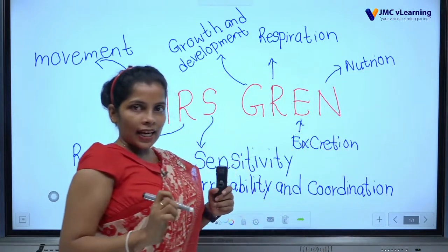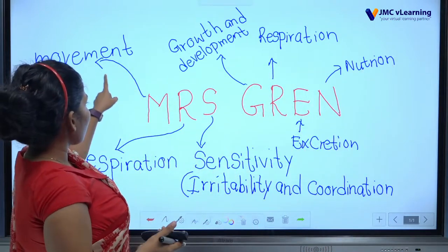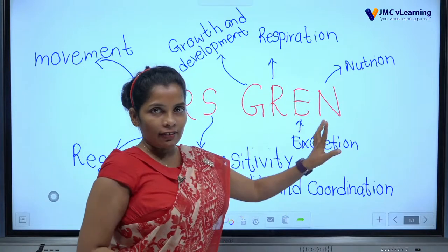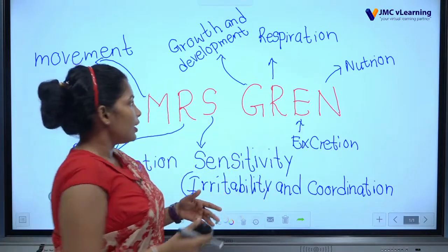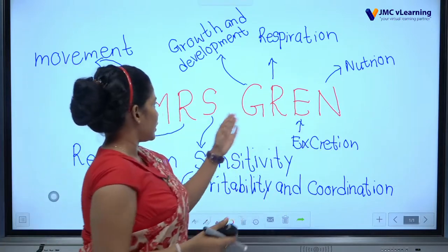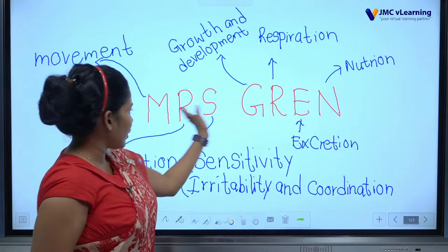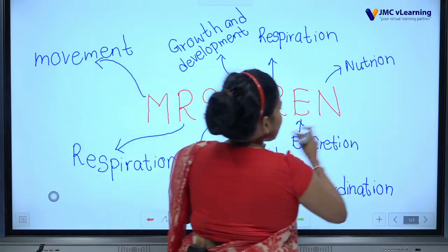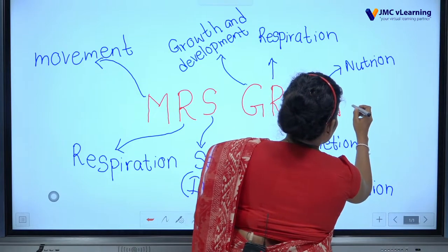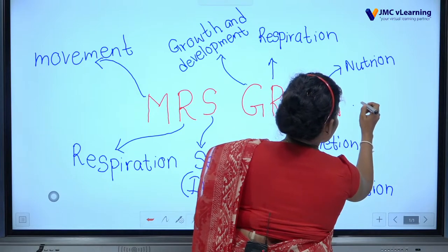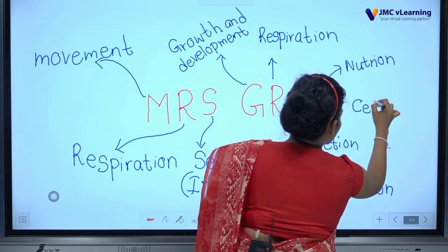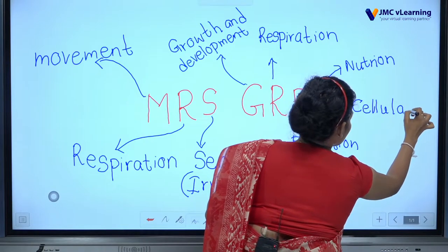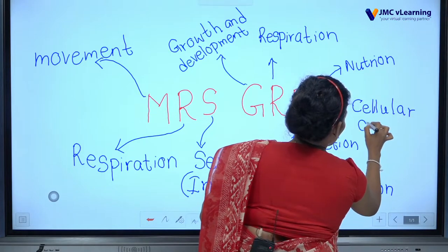How many characteristics are there? 1, 2, 3, 4, 5, 6, and 7. There is another one that you may not be familiar with — it is cellular organization.